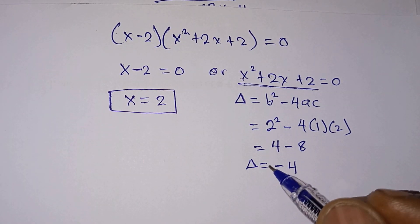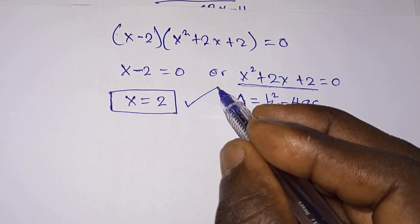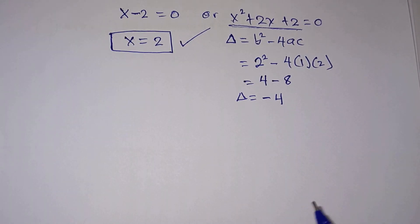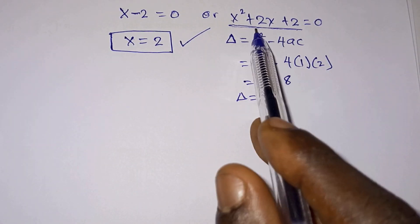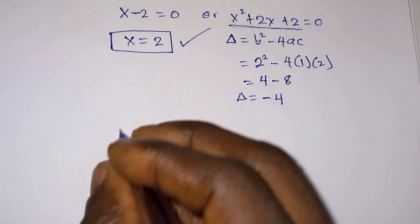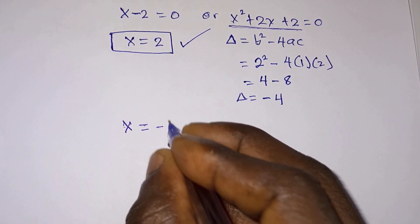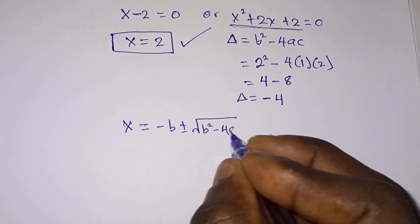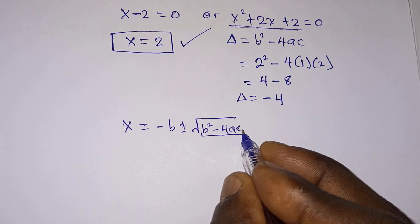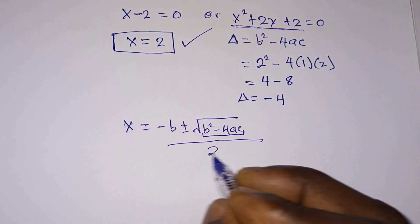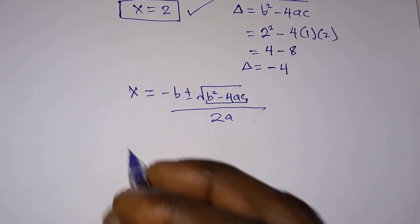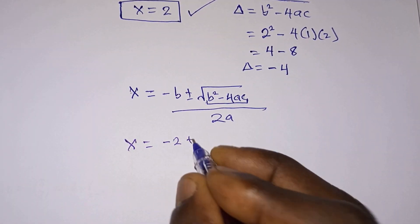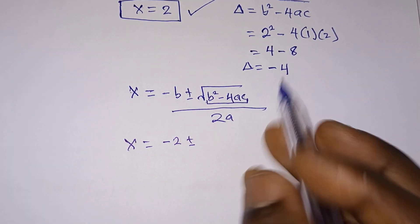Since the discriminant is negative, the only real solution to the problem is x equals 2. This answers part i. Now let's move on to part ii, the complex solutions. The complex solutions come from the quadratic x squared plus 2x plus 2 equals 0, using the quadratic formula: x equals negative b plus or minus the square root of b squared minus 4ac, all divided by 2a.